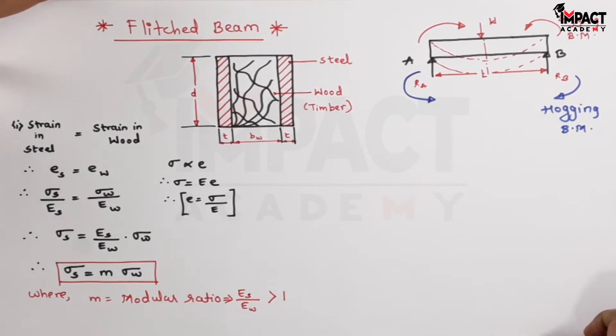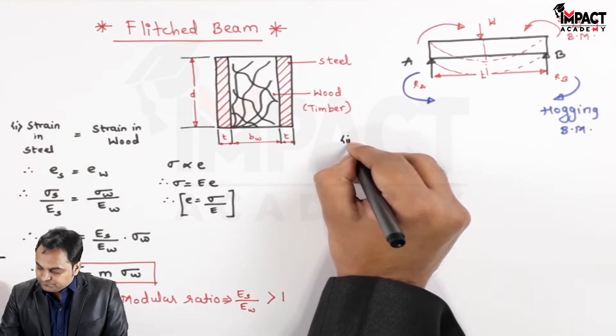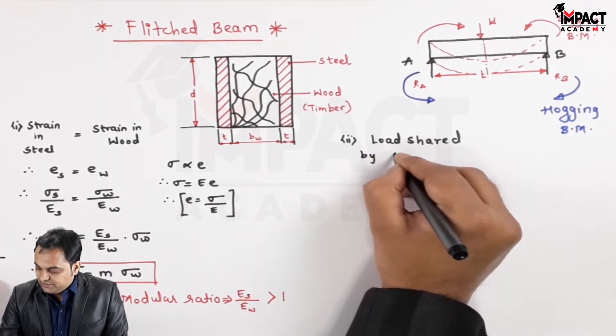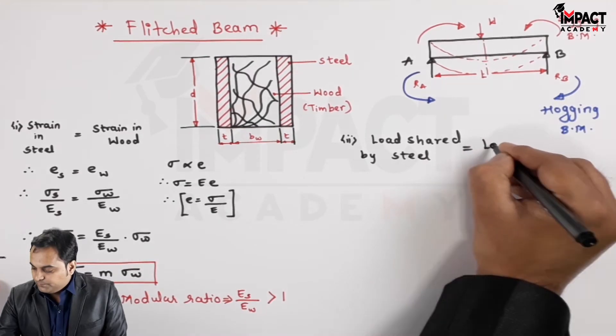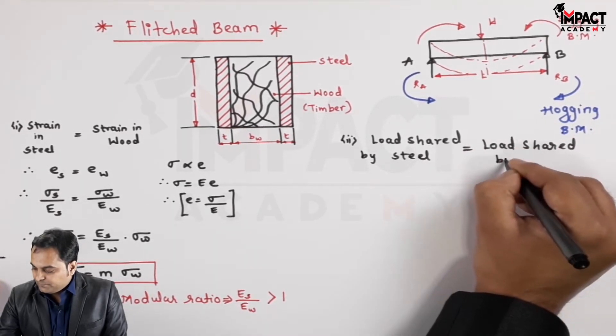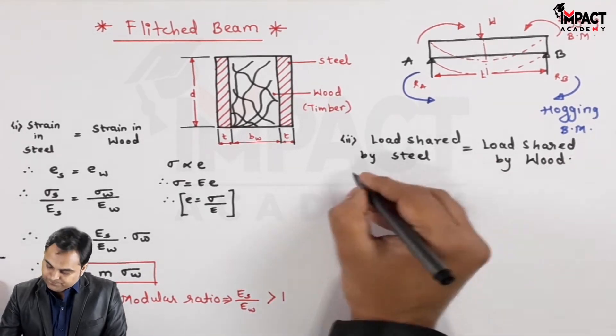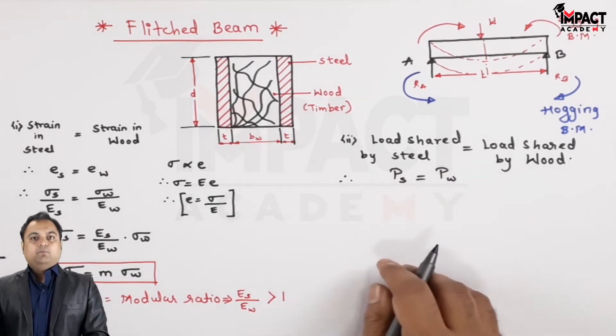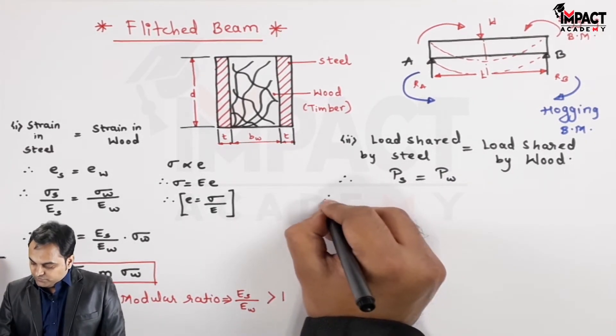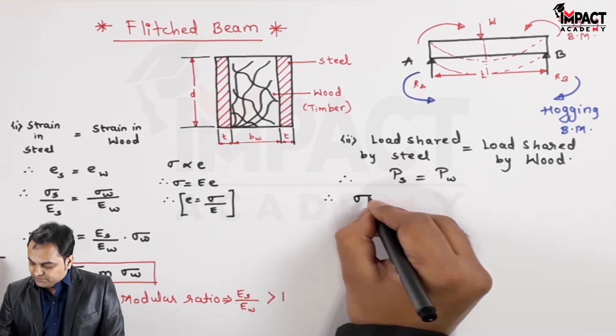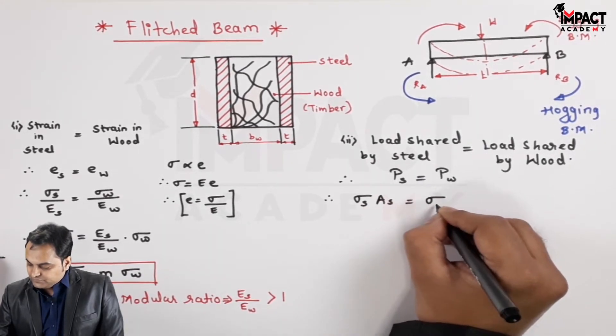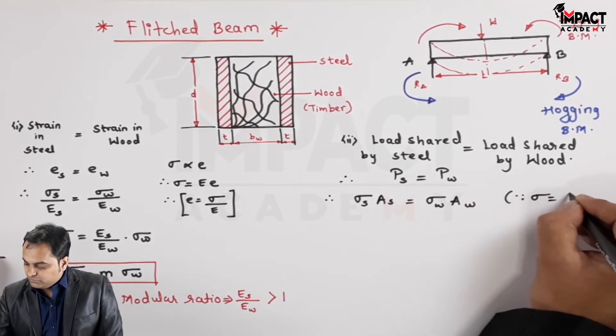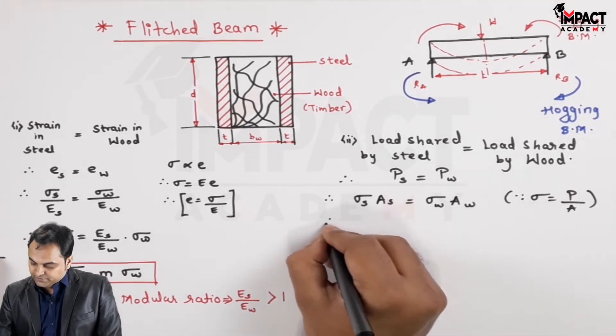The another conclusion is load shared by steel would be equal to the load shared by wood or timber. Load is denoted by P, suffix s for steel and wood. Both would be resisting the load which is equal and load is nothing but stress into area.